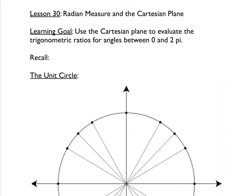In this unit, we're going to relate radian measure and the Cartesian plane. We're going to use the Cartesian plane to evaluate the trigonometric ratios for all angles between 0 and 2π.